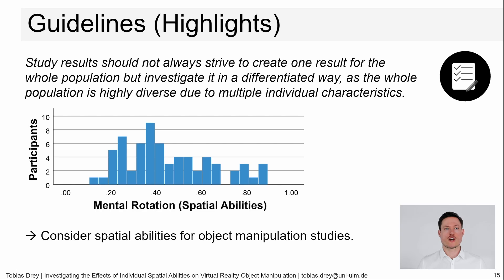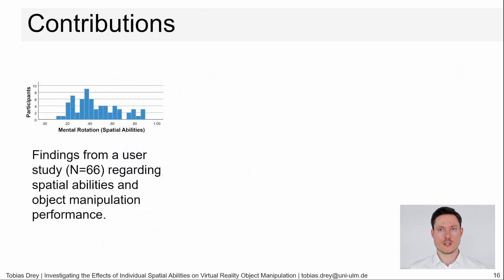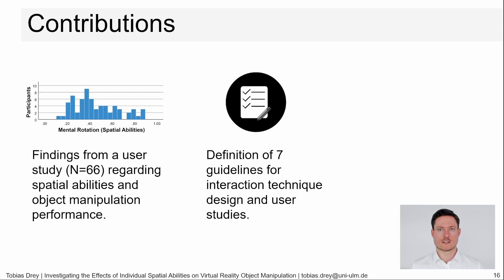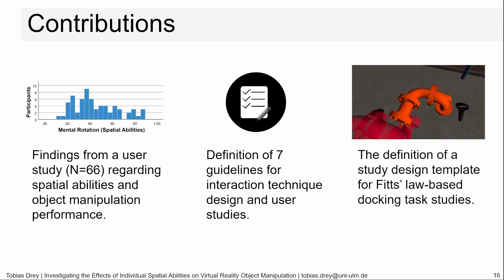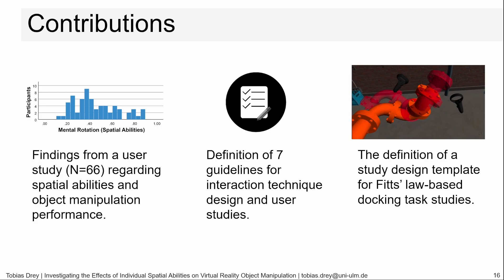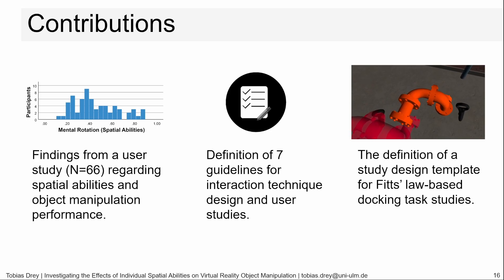Summing up, we had three main contributions. First, findings from an exploratory user study regarding the correlations of individual spatial abilities and task completion time and accuracy, measured by 11 dependent and 5 control variables. Second, the definition of seven guidelines on how to consider individual spatial abilities of participants in VR interaction technique design as well as associated user studies. Third, the definition of a study design template that considers users' individual characteristics for object manipulation interaction technique studies based on docking tasks, which are defined by formulas derived from Fitts' law — a methodological contribution according to Wohlin and Runeson.